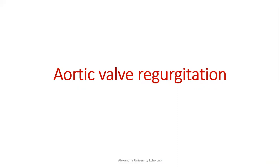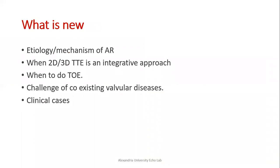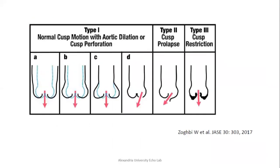Moving to assessment of aortic valve regurgitation — we report etiology and mechanism, use an integrated 3D transthoracic approach, and determine when to perform TEE. In 2017, a paper published in JACE introduced a classification of aortic valve regurgitation analogous to the Carpentier classification for mitral regurgitation. Type 1: normal cusp motion with possible annular dilatation. Type 2: cusp prolapse. Type 3: restriction or fibrosis of the cusp.